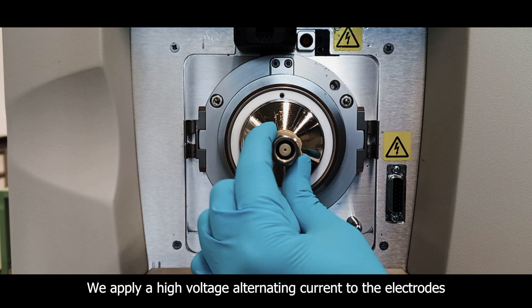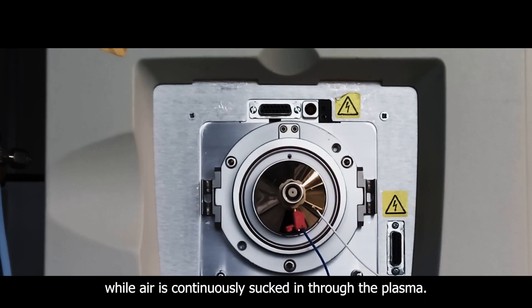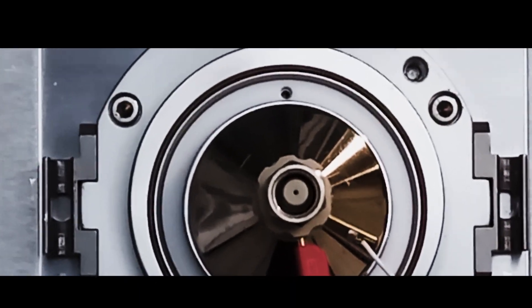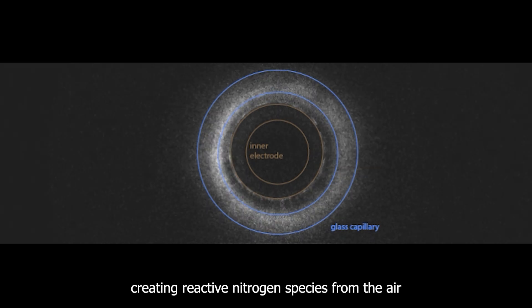We apply a high voltage alternating current to the electrodes while air is continuously sucked in through the plasma. Inside, discharges form, creating reactive nitrogen species from the air.